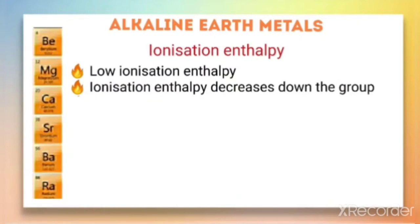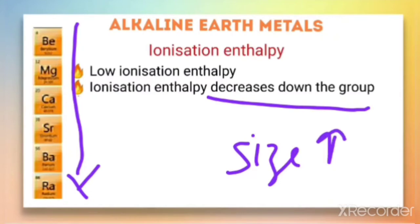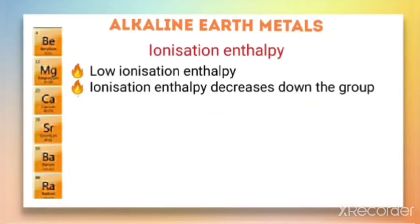In general, alkaline earth metals have low ionization enthalpy but higher ionization enthalpy than the alkali metal in the same period. The ionization enthalpy decreases down the group because as we go from top to bottom the size increases, and greater size means lesser ionization enthalpy.